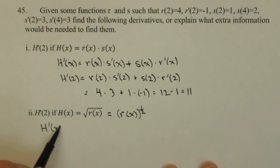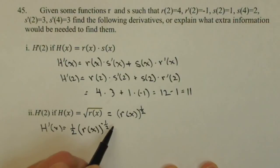Then H prime of x is, via chain rule, the one half's going to come out front, leave the inside alone, r of x, to the negative one half, times the derivative of the inside, which is r prime of x.